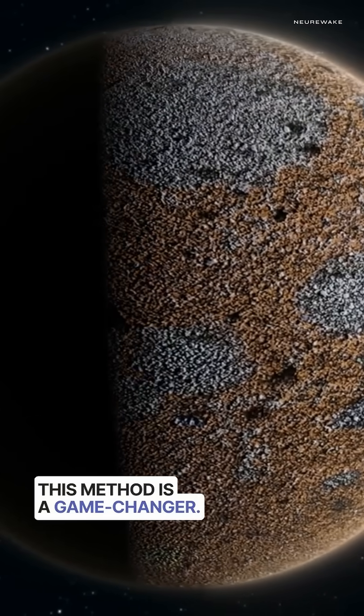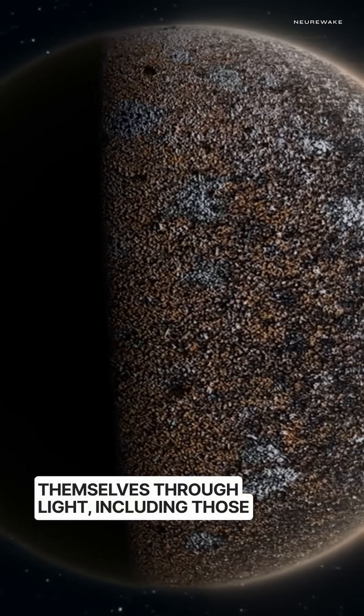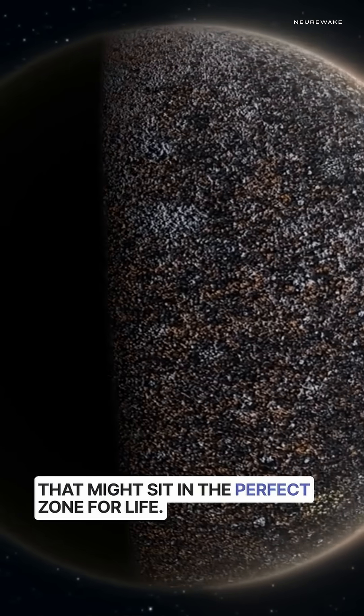This method is a game-changer. It shows we can find planets that don't reveal themselves through light, including those that might sit in the perfect zone for life.